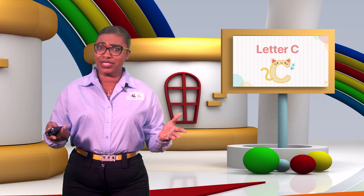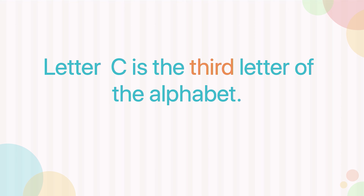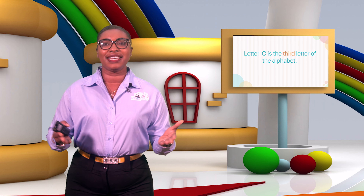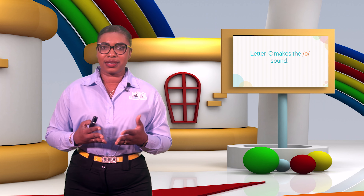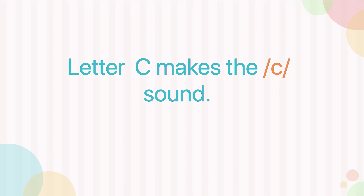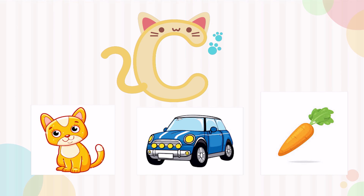Do you know letter C? Letter C is the third letter of the alphabet. Have you seen that letter before? Like letter B, letter C is also known as a consonant. Letter C makes the sound 'c, c, c.' And C makes that sound in words such as 'cat,' 'car,' and 'carrot.'